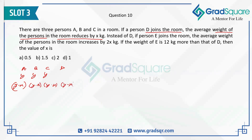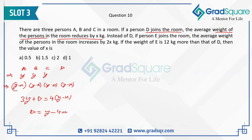So now you can make a simple equation. Three Y was the weight of A, B, C plus the weight of D, which will be the total weight of all four of them. This should equal four times of Y minus X, which is the average weight of the four of them. So four times of Y minus X equals three Y plus D. You get the value of D, which is the weight of D: four Y minus three Y, which is Y minus four X. This is the weight of D.